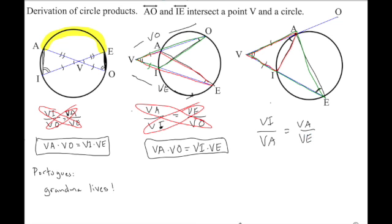So when we cross multiply here, we have VA times VA equals VI times VE.